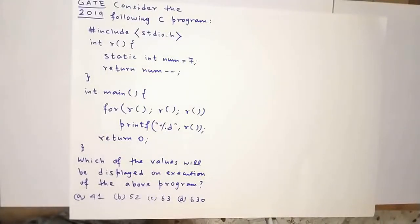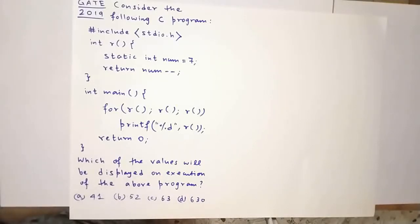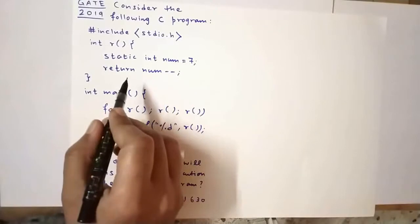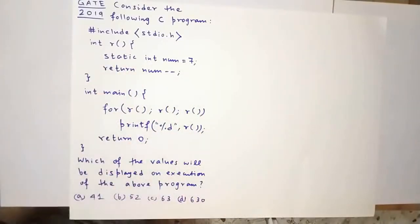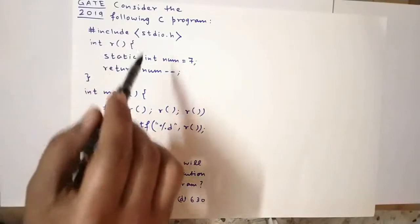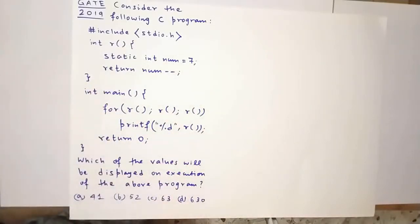Let's solve this question which has been asked in GATE 2019. We are given a code snippet with two functions, r and main. We have to find the value to be displayed on execution of this entire program.